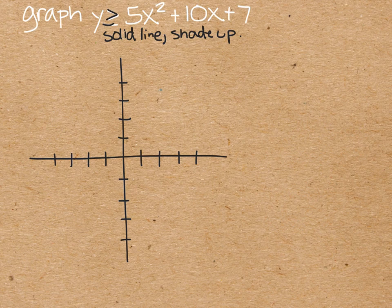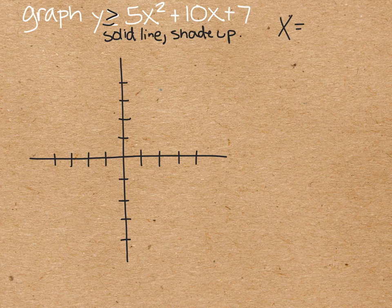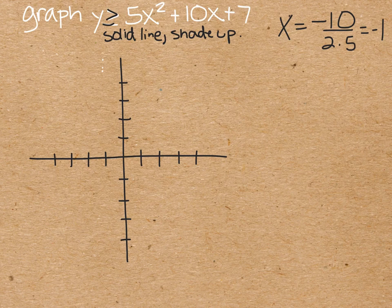So now, as a review of graphing quadratics in standard form, we want to find the axis of symmetry at x equals negative b over 2a, so negative 10 divided by 2 times 5, which is negative 1. You don't have to dash it on there, but it helps. There's your axis of symmetry.